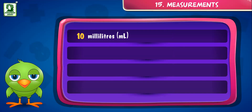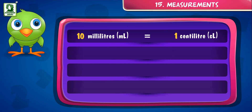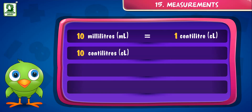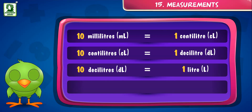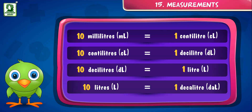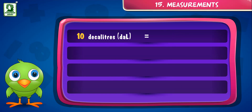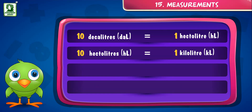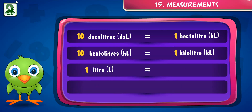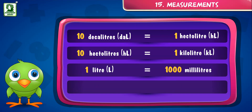10 milliliters is equal to 1 centiliter. 10 centiliters is equal to 1 deciliter. 10 deciliters is equal to 1 liter. 10 hectoliters is equal to 1 kiloliter. And 1 liter is equal to 1,000 milliliters.